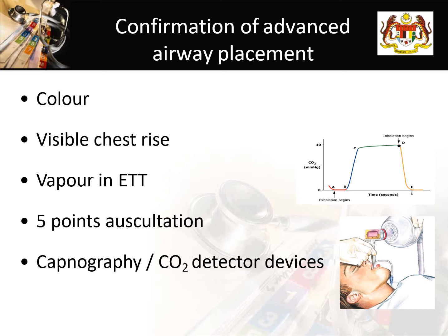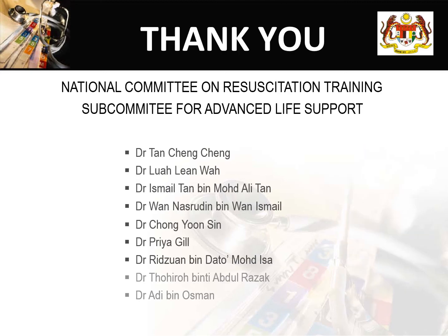Post-intubation confirmation is very important to ensure your ETT is placed correctly. The most essential confirmation is direct visualization of the tube passing through the vocal cords. Then observe the patient's color — they should be pink — and when you bag the patient, look for equal bilateral chest rise, followed by five-point auscultation. Auscultate the epigastrium first to detect esophageal intubation as early as possible. You can also visualize vapor in the ETT and connect it to a CO2 detection device, using capnography to confirm tracheal placement. Thank you for listening — we will learn more during the skills station.